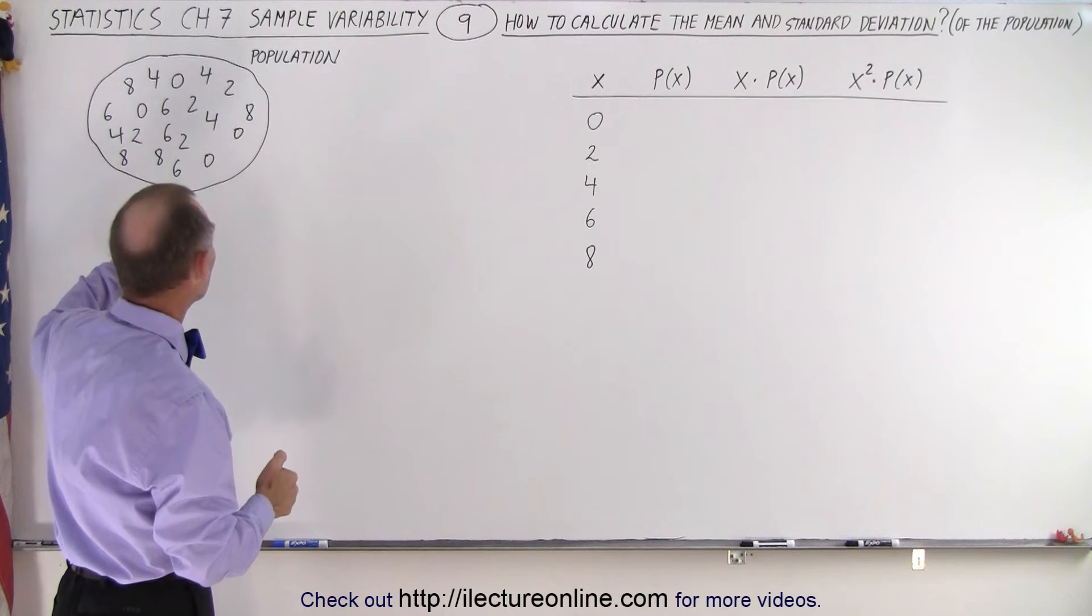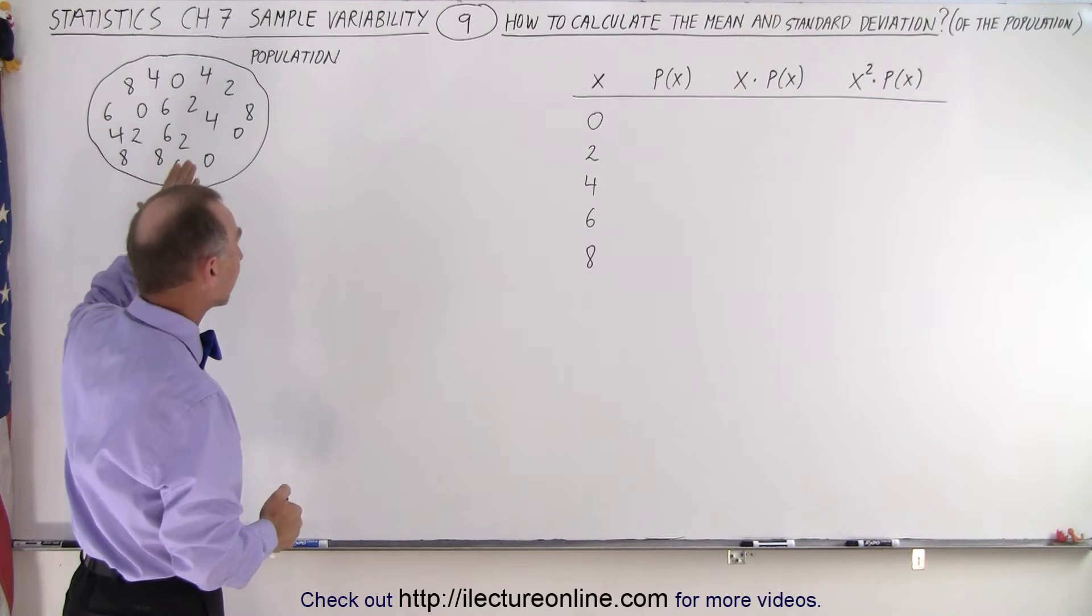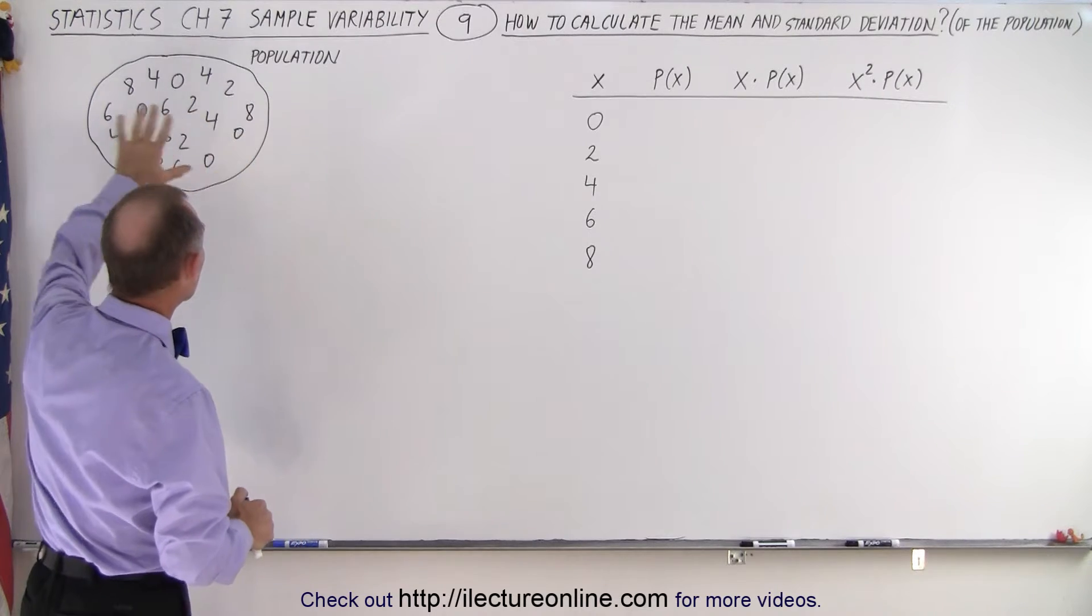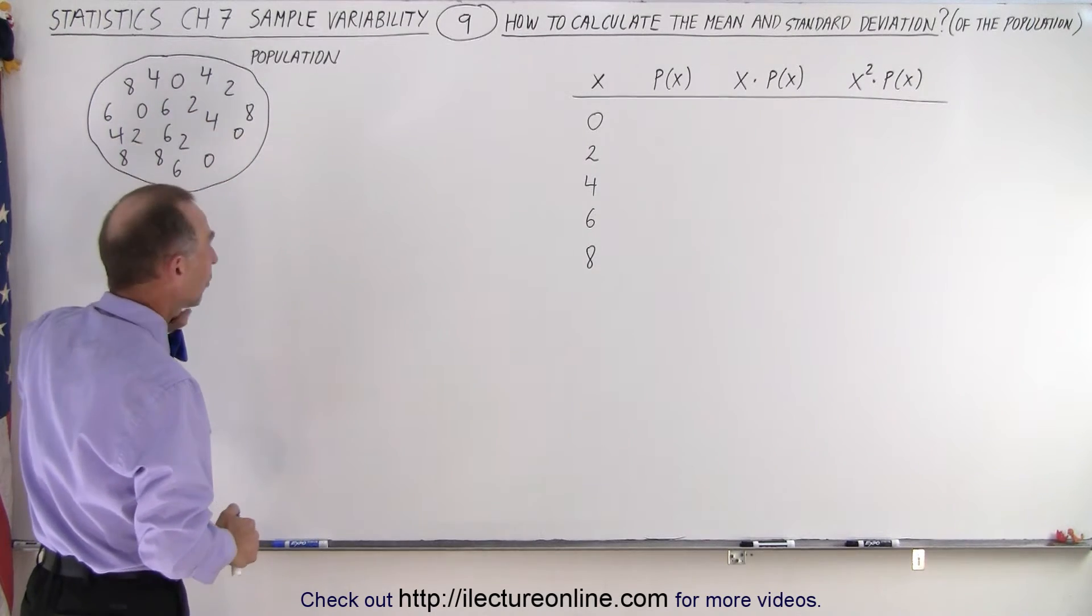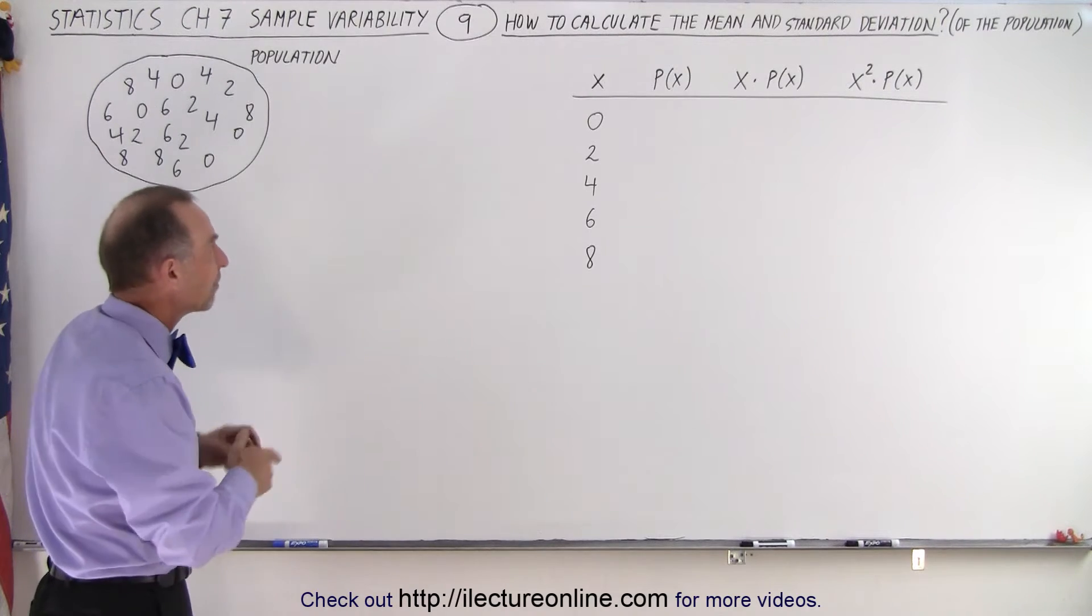Notice that the possibilities when we grab a sample or when we look at the population, we can only have a 0, a 2, a 4, a 6, or an 8. And also notice that there's an equal number of each of those numbers, so the probability of grabbing one of those should be the same for every number.